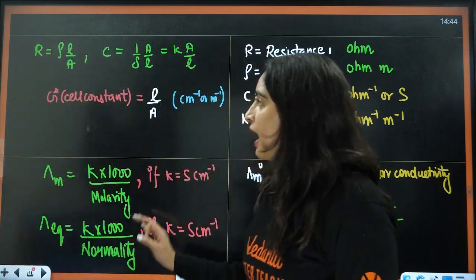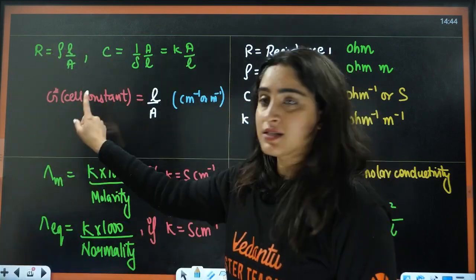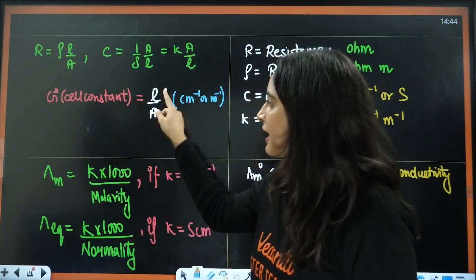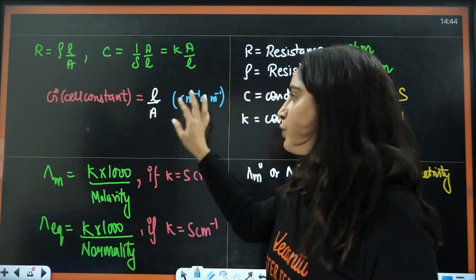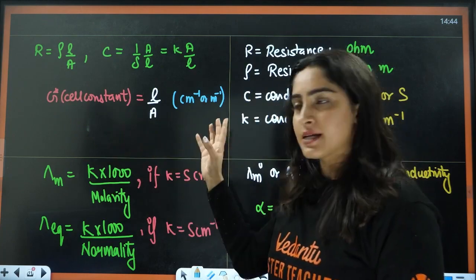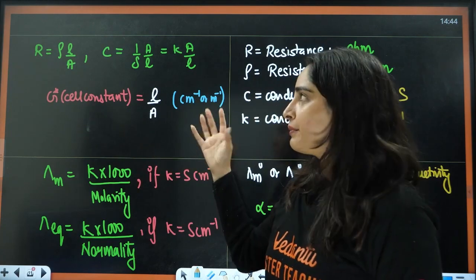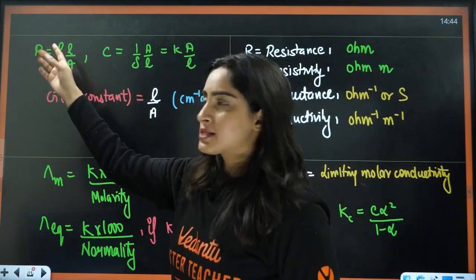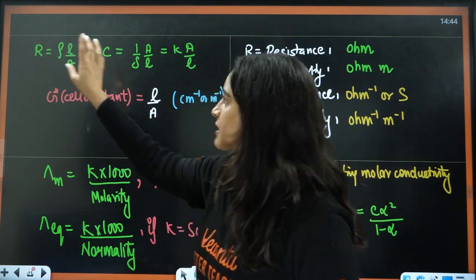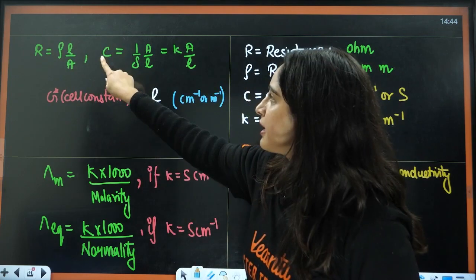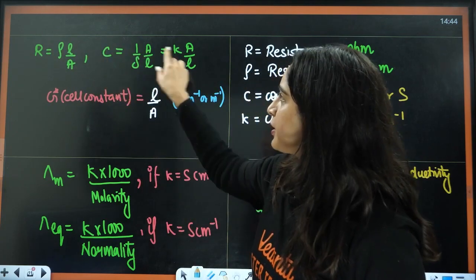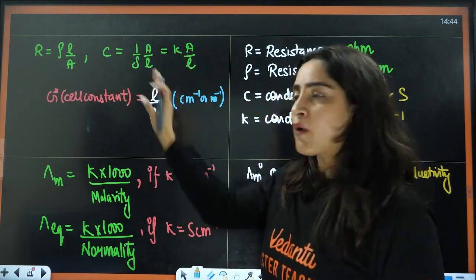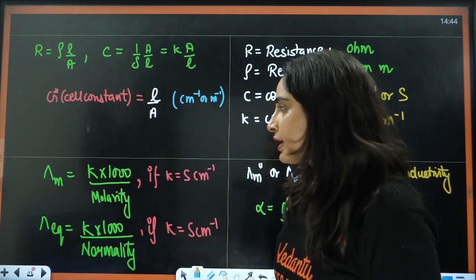Next, we have cell constant, represented by G*, which equals L divided by A. Units can be per centimeter or per meter. R is related to resistivity, and conductance is related to conductivity through the cell constant. These formulas are very important.